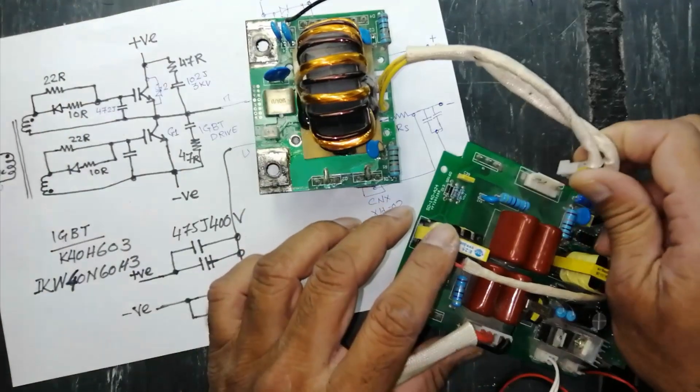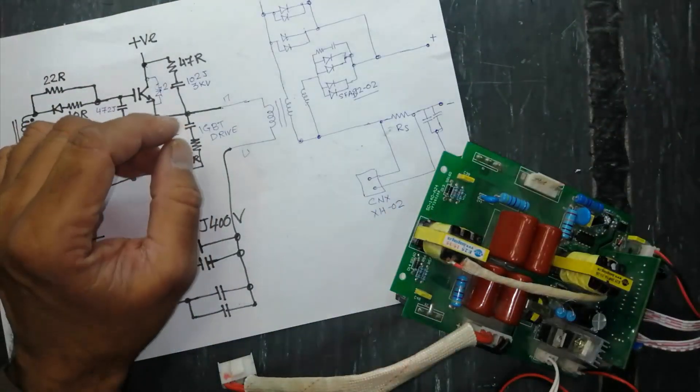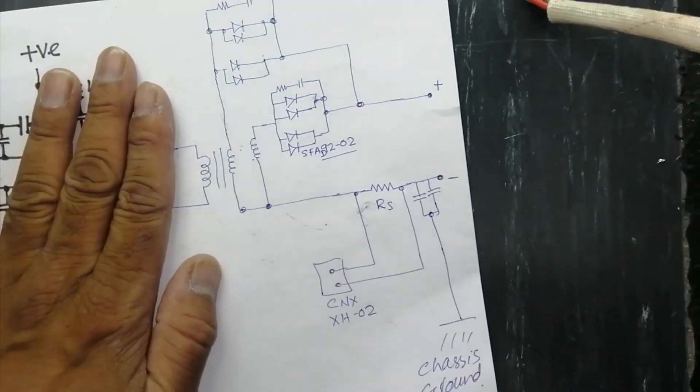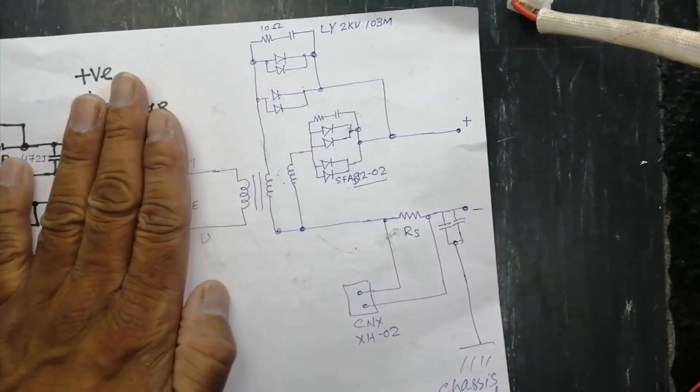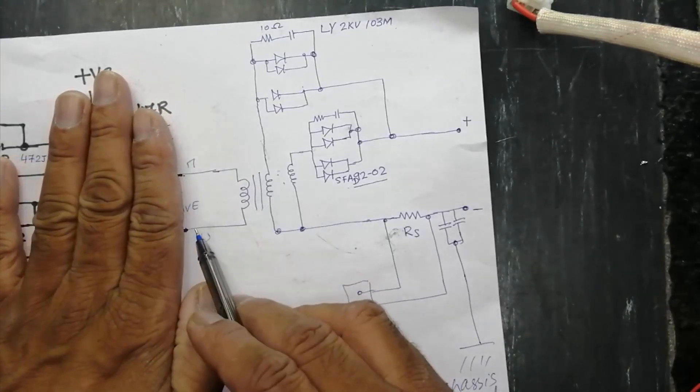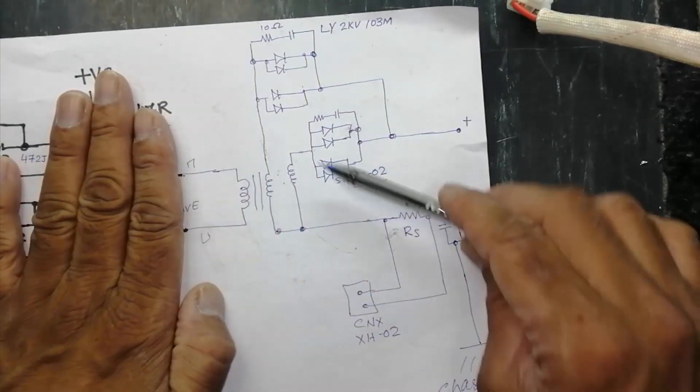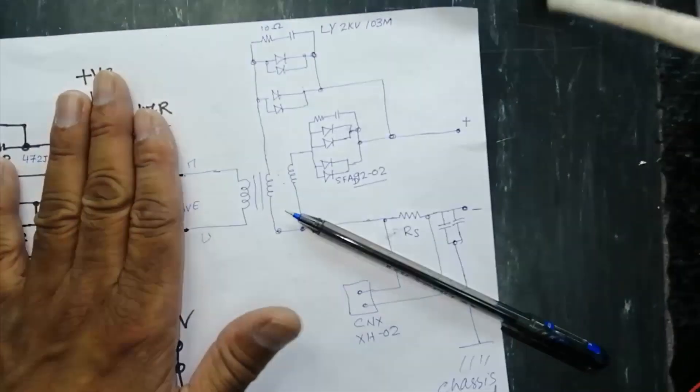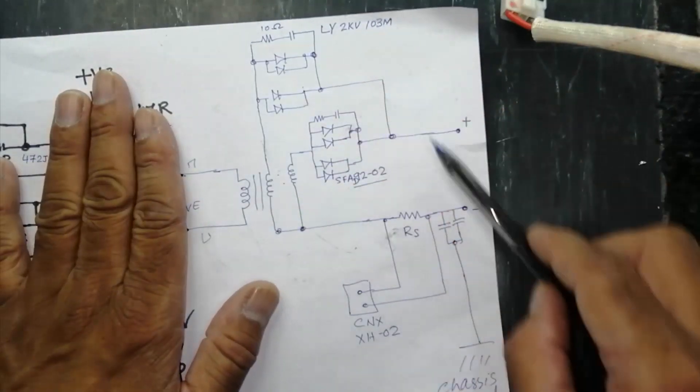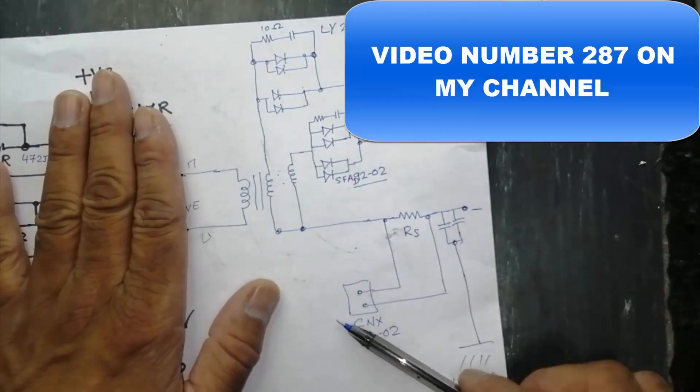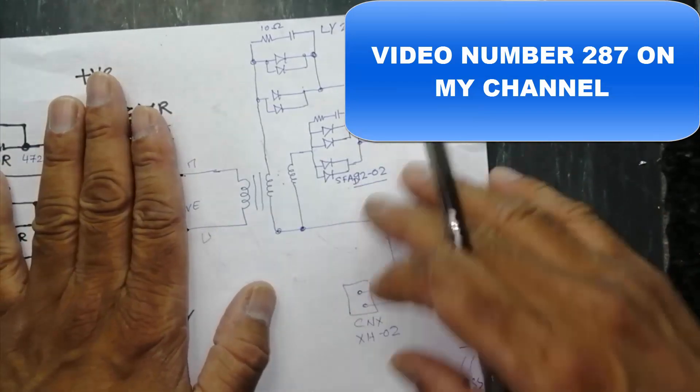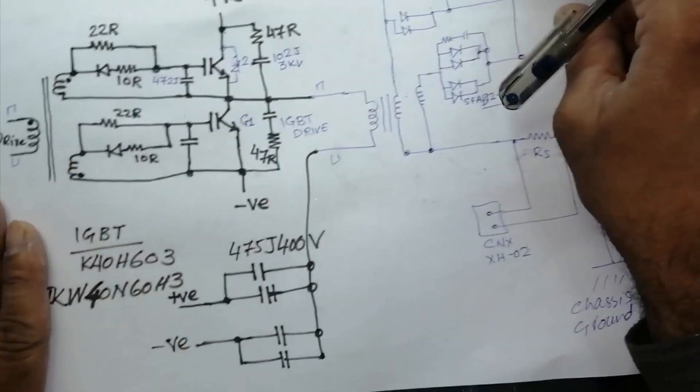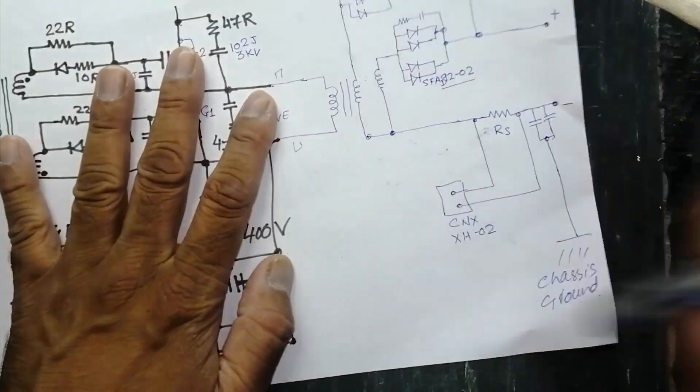So let's start. In our last video I discussed the output stage that we receive drive and transformer is center tapped, each section have set of diodes rectifiers and we take output. Here is the current sensor and other things. If you want to watch this complete video you can follow the link. Now how the drive circuit is working.